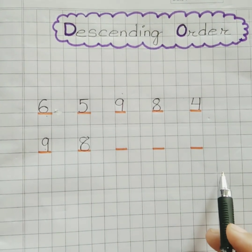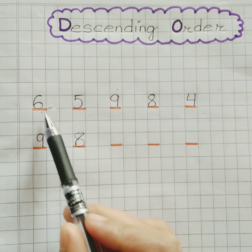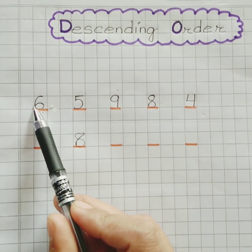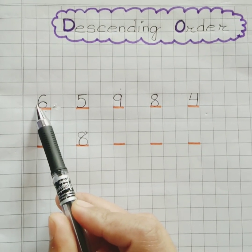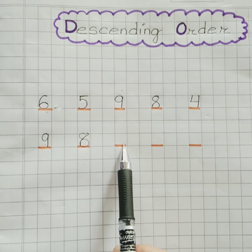After 8, 6 is the third largest number. So we'll write 6 at third place.